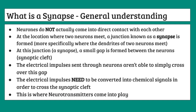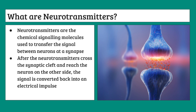Within this junction, a small gap is formed between the two neurons, and this is what we call the synaptic cleft, or the synaptic gap. Now, the electrical impulses that are sent along these neurons aren't able to cross the gap — they can't jump across. So the electrical impulses need to be converted into chemical signals in order to cross the synaptic cleft. This is where our second key term comes into play: neurotransmitters. Neurotransmitters are the chemical signaling molecules used to transfer the signal between neurons at a synapse, allowing those electrical signals to cross the synaptic cleft as chemical signals.